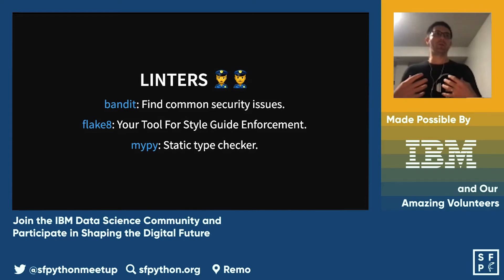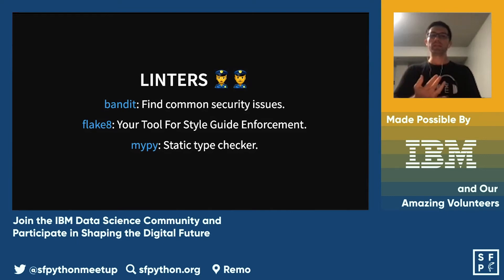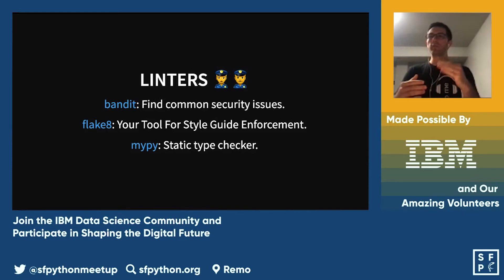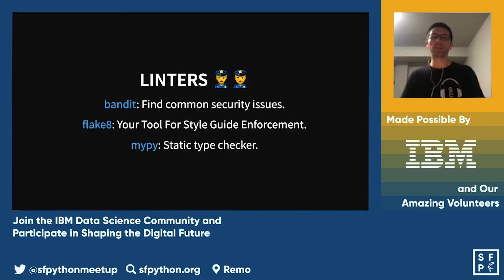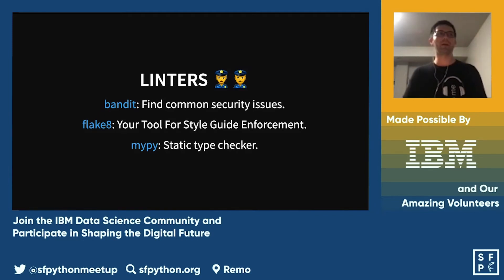Flake8 is in my opinion the most important tool to set up. It warns you about unused and undefined variables, unused and missing imports, wildcard imports, missing formatting arguments, and function redefinition — if you have two functions with the same name it'll warn you. It also comes with a lot of plugins like flake8-docstrings and flake8-eradicate. Search for 'awesome flake8 extensions' on GitHub to see the full list.